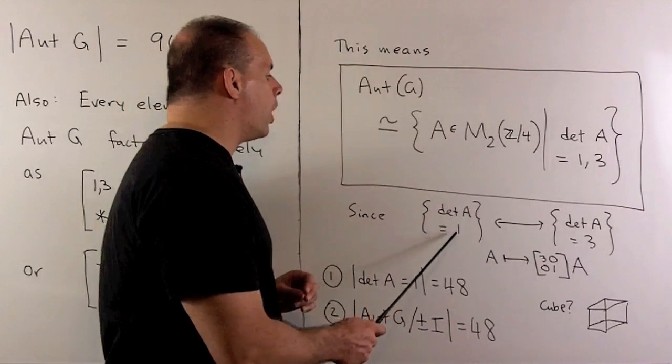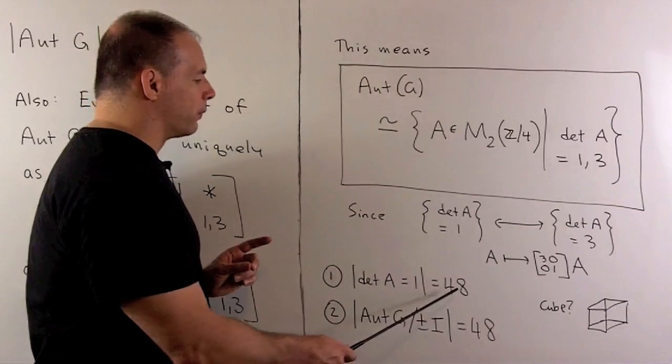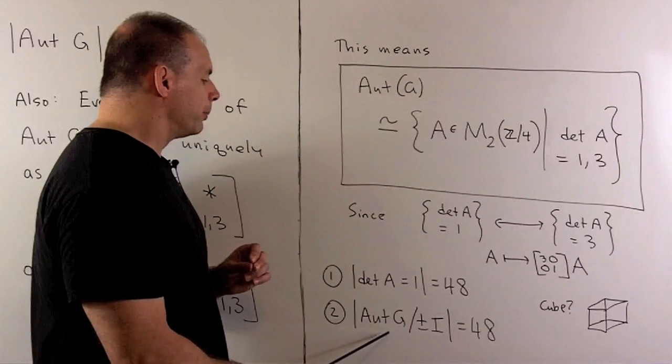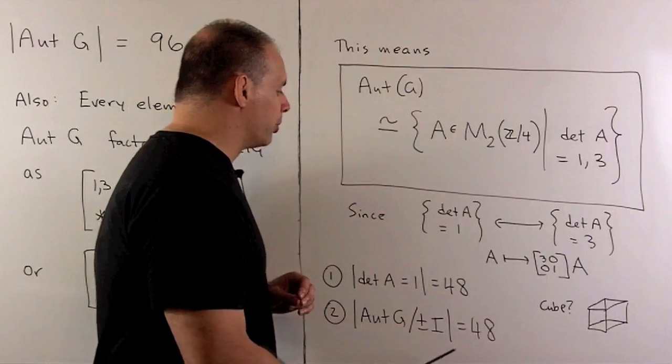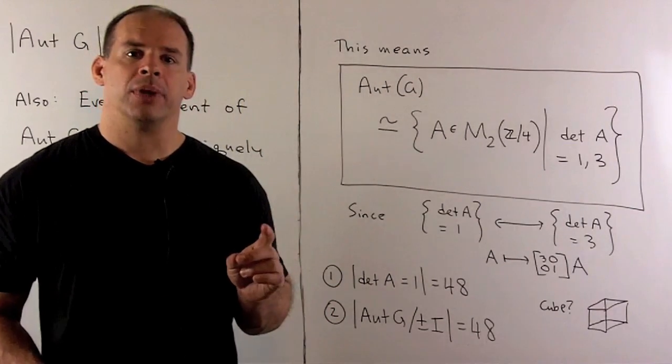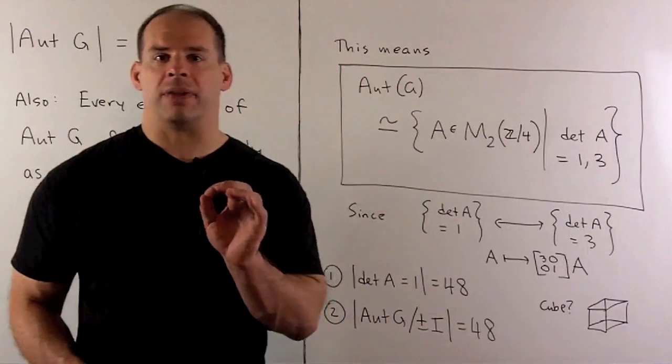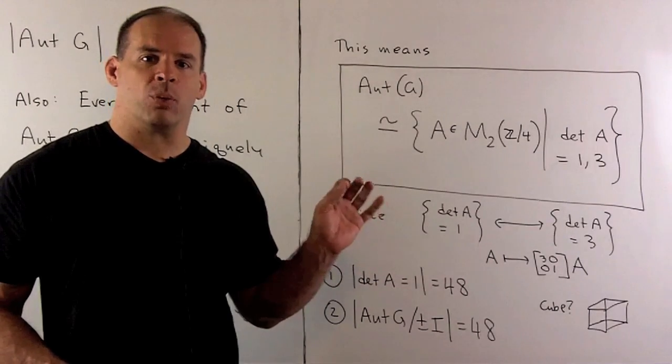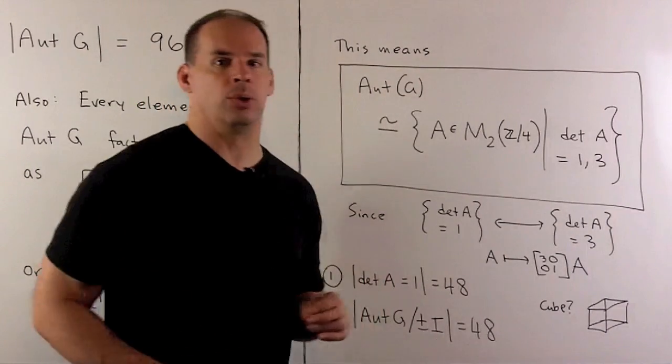Now, the set with determinant A equal to 1 is also going to be a group. So, that'll have order 48. We also note, if I take automorphism group, we mod out by plus minus the identity matrix, we're going to get another group of order 48. Okay, what's so special about order 48? Well, if we take the symmetries of the cube, we allow for reflections, then that group also has order 48. So, a question I haven't worked out yet, is there a connection between one of these groups and the symmetries of the cube?